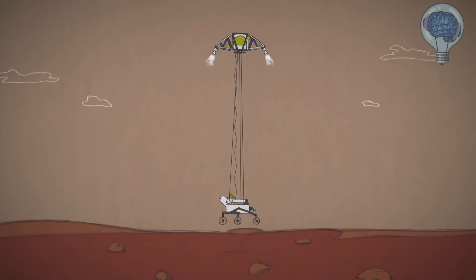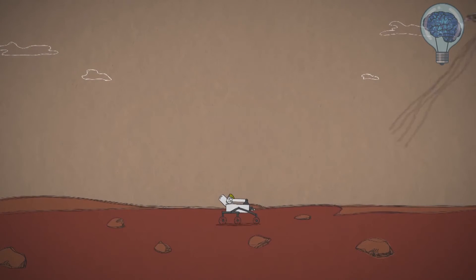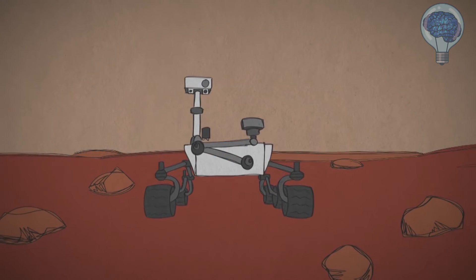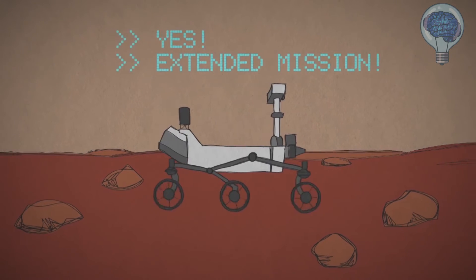When the Curiosity rover got to Mars, its mission was to explore Mars for at least 687 Earth days, one Mars year. But like our other long-lasting rovers, it hit its target and kept on rolling.